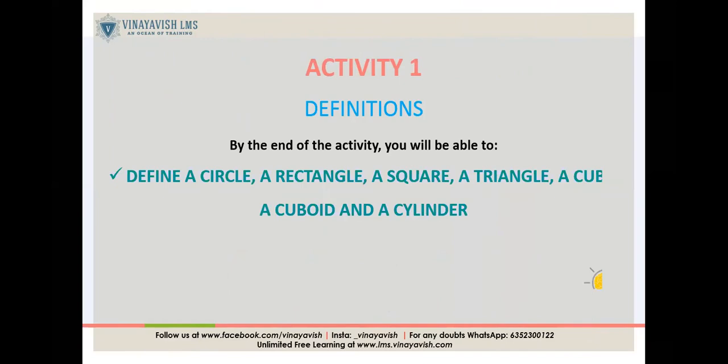That is what we are going to do today. So, your activity one will be more or less about definitions. We will see definitions. Who is called circle and who is called square? Also, rectangle, triangle, cuboid, cube, cylinder. What are all these things?